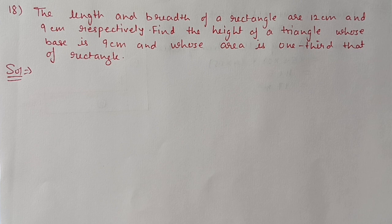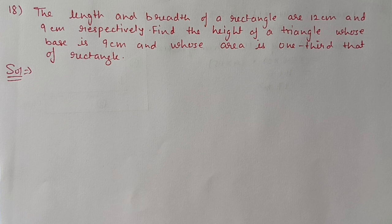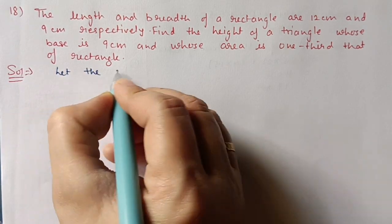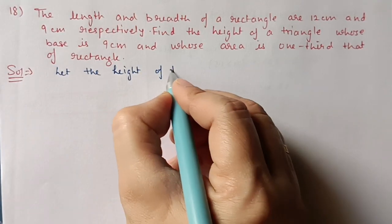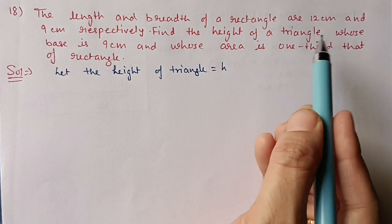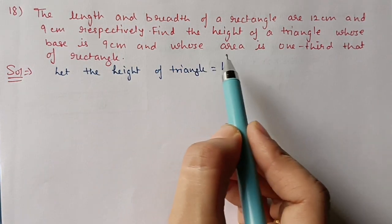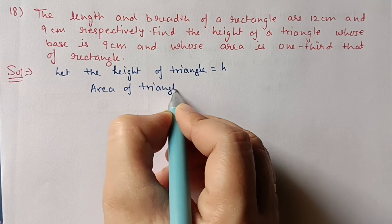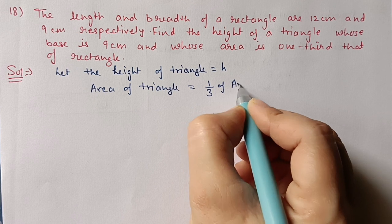Next is Question 18: the length and breadth of a rectangle are 12 centimeters and 9 centimeters respectively. Find the height of a triangle whose base is 9 centimeters and whose area is one-third of the rectangle. Rectangle dimensions are given, and for the triangle only the base is given — we have to find its height. Let the height of the triangle be h. The condition is: area of triangle equals one-third of area of rectangle.